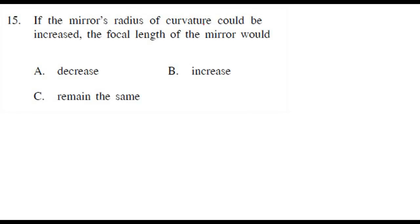If the mirror's radius of curvature is increased — we know that R is twice F, or F equals R divided by 2 — so if you increase R, the focal length also increases.